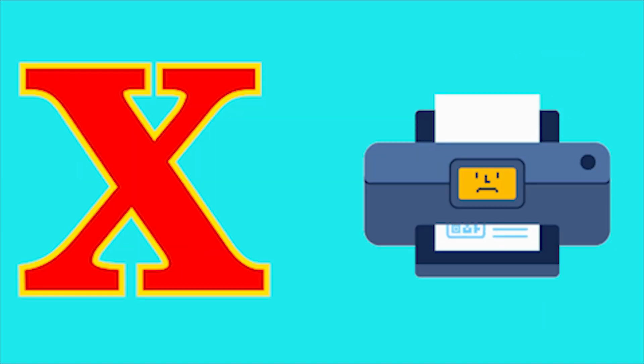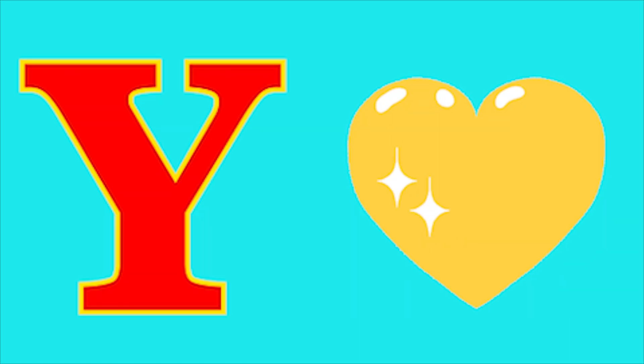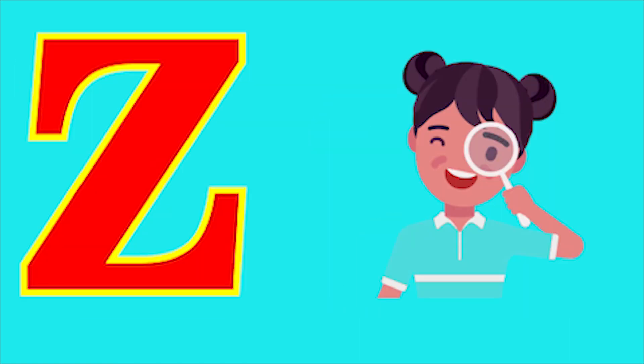V for vase, W for whale, X for zero, Y for yellow, Z for zoo.